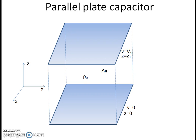We will now take the example of a parallel plate capacitor. The area of the plates is assumed to be very large. The lower plate is at z equals zero and the upper plate is at z equals z1. The potential of the lower plate at z equals zero is V equals zero, and the potential of the upper plate at z equals z1 is V equals V1.